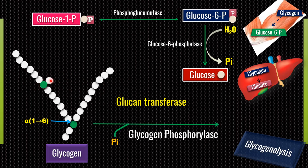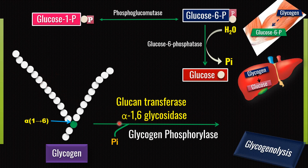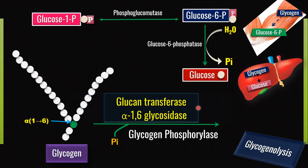Now we have a branching point with an α-1,6 glycosidic bond. This can be removed by another enzyme called α-1,6 glycosidase, which breaks the α-1,6 glycosidic bond and releases free glucose. Please remember, α-1,6 glycosidase removes glucose from the α-1,6 bond and the released glucose is free glucose. Glucan transferase and α-1,6 glycosidase are not separate enzymes — they are a single protein with two enzymatic activities, meaning they have two separate active sites. This is also known as a bifunctional enzyme.